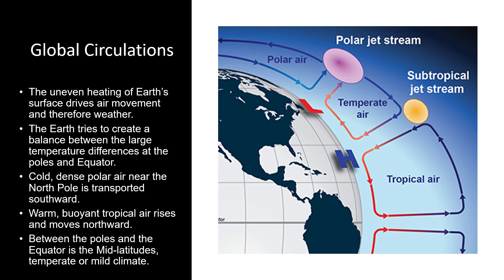Between the poles and the equator is the mid-latitudes, characterized by a temperate or mild climate. In the mid-latitudes, warm tropical air is common in the summer, and cold polar air is common in the winter.